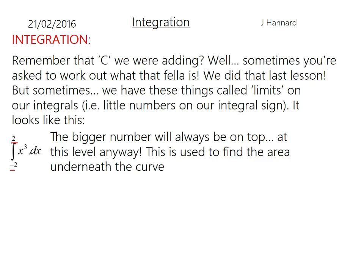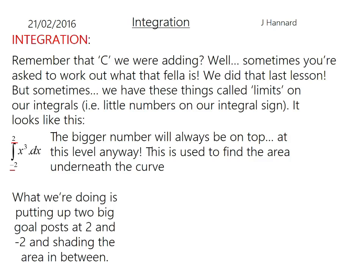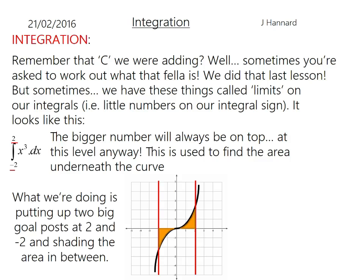What we're doing in reality is putting two big goalposts at 2 and minus 2 and shading the area in between. So if we have a little generic x cubed graph there, put up the goalposts at minus 2 and 2 and just shading in the area underneath, well between the curve and the x axis.